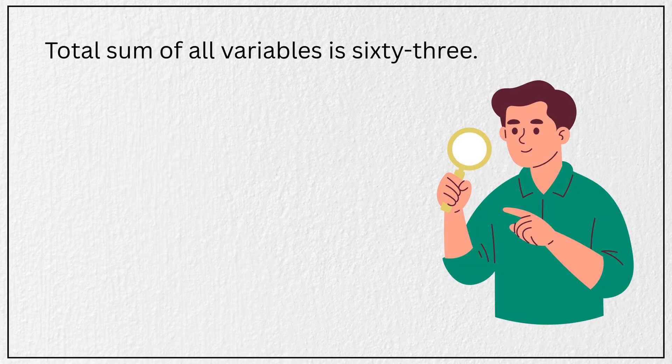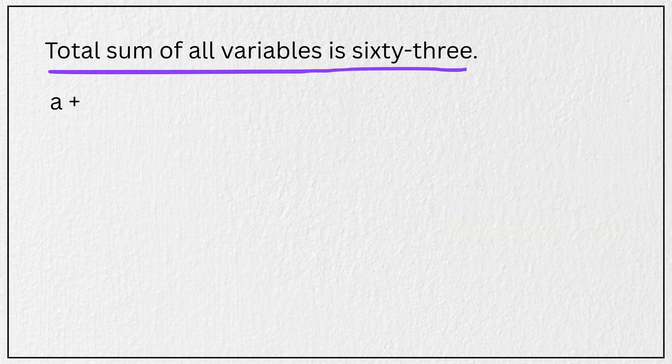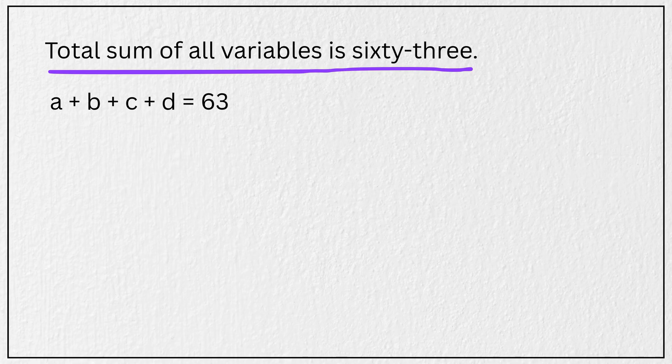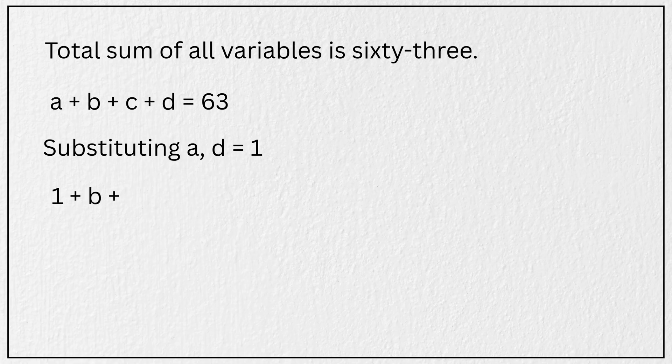Look at this original condition that total sum of all variables is 63. That means A plus B plus C plus D equals 63. And substituting A and D as one each, we now have 1 plus B plus C plus 1 equals 63. And subtracting 2 from both sides, we get B plus C equals 61. Let's call this as equation 1.